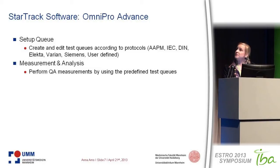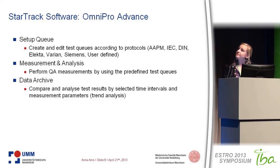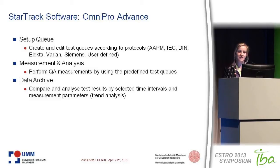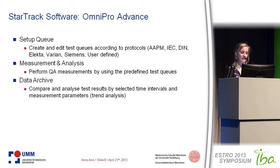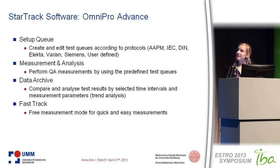You set up your queue once and you can use it in the measurement and analysis section, where you perform your QA measurements. The third section is the data archive, where you can compare and analyze all test results over time, select different time intervals, evaluate profiles or dose outputs, and have a trend analysis of the stability of your linear accelerator. The fourth section is Fast Track, a free measurement mode that supports quick measurements after, for example, Linac maintenance.